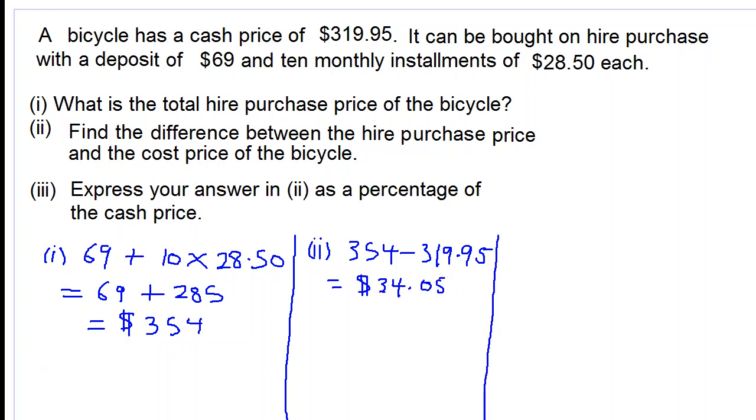Let's look at the last part of the question. Express your answer as a percentage of the cash price. First, we have to express it as a fraction of the cash price. The cash price is $319.95, so we will put $34.05 over $319.95 and then multiply this by 100 over 1.